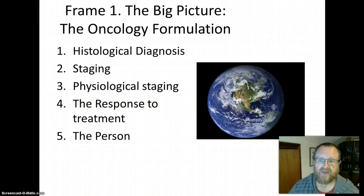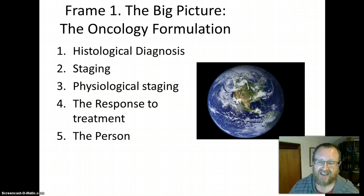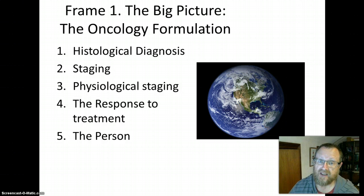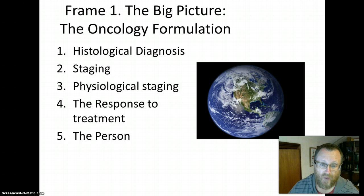The first frame to discuss is the big picture, or what a typical oncology formulation looks like. This typically has five components: a histological diagnosis, staging, physiological staging, the response to treatment, and an idea of the person. By physiological staging, I mean those comorbidities or assessments of function that impact upon the patient's ability to cope with anti-cancer treatment — this might be a comorbidity or an objective measurement of organ reserve such as renal or hepatic reserve.